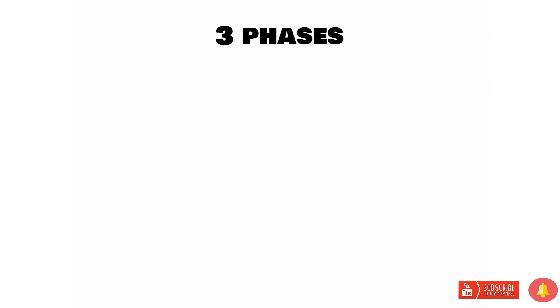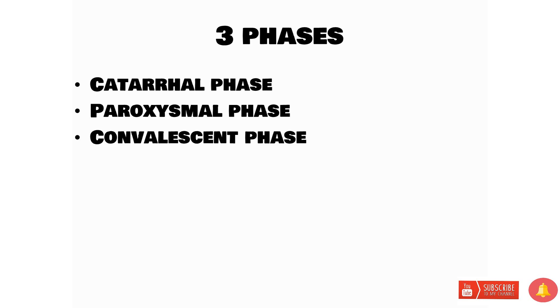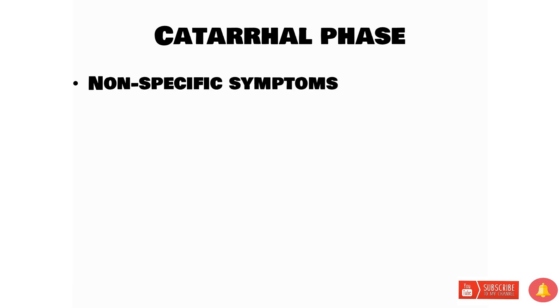The clinical course of pertussis can be divided into three phases: the catarrhal phase, paroxysmal phase, and convalescent phase — you can remember these by the mnemonic CPC. Initially, the catarrhal phase is the first phase, which happens after the incubation period is over. In this phase the patient shows non-specific symptoms like high-grade fever and coryza, conjunctival redness, and other non-specific symptoms.